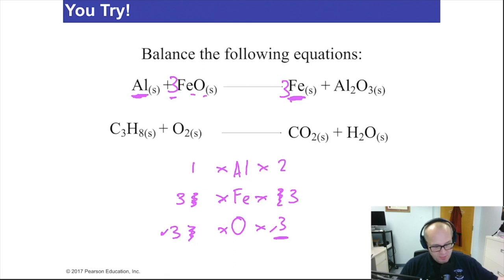By putting a three there in front of that iron on the right, it doesn't change anything else. It just changes the iron. So now the irons are balanced. So let's balance the aluminum. Two aluminum. Two aluminum. Three Fe. Three Fe. Three times one is three oxygens. And that's how you balance that question.